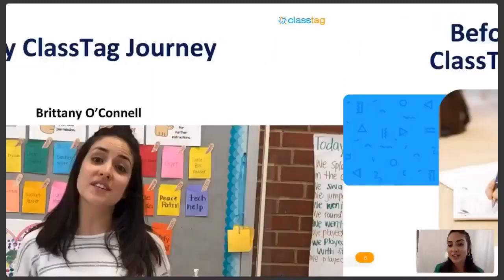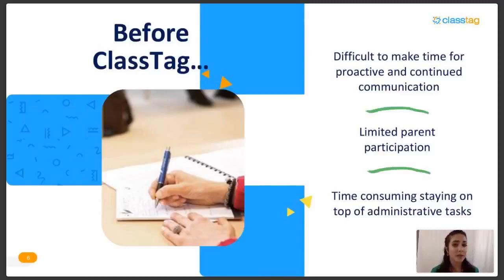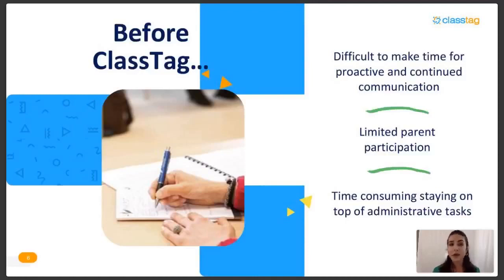Before I started using Class Tag, I really faced a lot of challenges. As a new teacher, parent communication was the hardest thing for me to incorporate proactively. I had 17 four, five, and six-year-olds in the same classroom, and I felt like a human Google calendar. I never found time to proactively communicate with parents outside of a printed weekly newsletter, and I had limited parent participation — nobody really read my newsletter and they didn't show up to events.